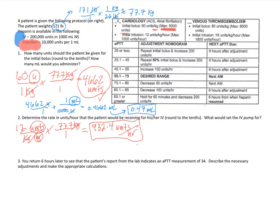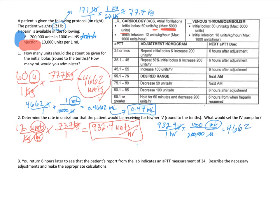We're physically setting up the IV pump, so we need to know what IV bag is available. We have 200,000 units in 1,000 milliliters. Taking 932.4 units per hour, we cancel out units using the IV bag concentration and convert to milliliters per hour. The calculation gives 4.662, which rounds to 4.7 milliliters per hour. That is the pump setting for the initial infusion.